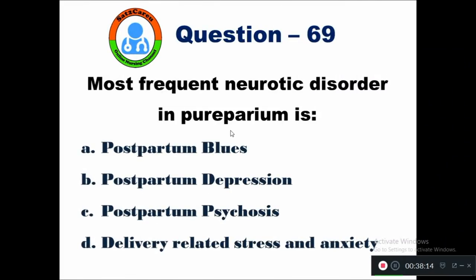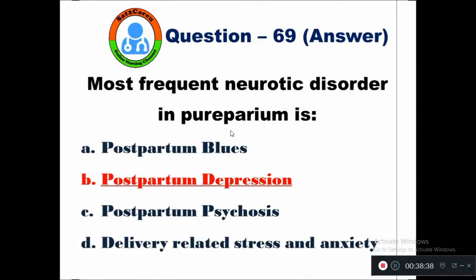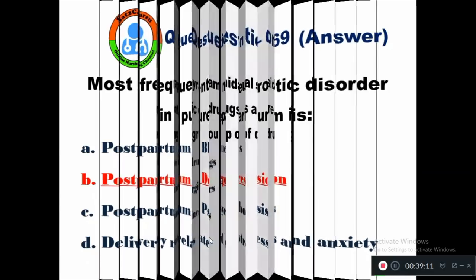Question 69: Most frequent neurotic disorder in puerperium is — option A postpartum blues, B postpartum depression, C postpartum psychosis, D delivery-related stress and anxiety. The right answer is delivery-related stress and anxiety. Postpartum depression is a psychotic disorder in puerperium. The most frequent neurotic disorder is delivery-related stress and anxiety. Option D is the right answer.